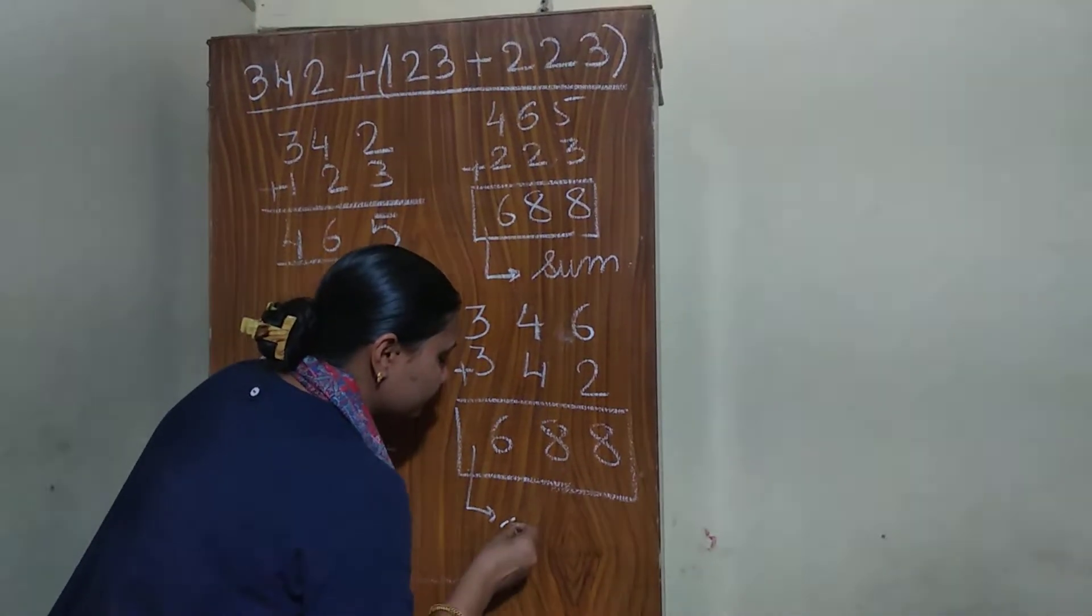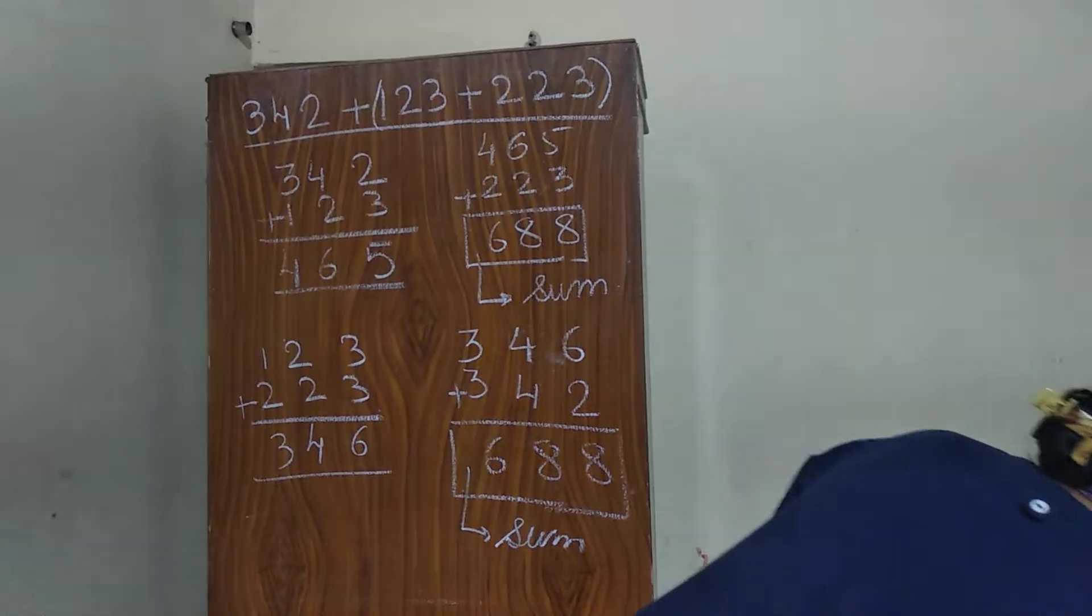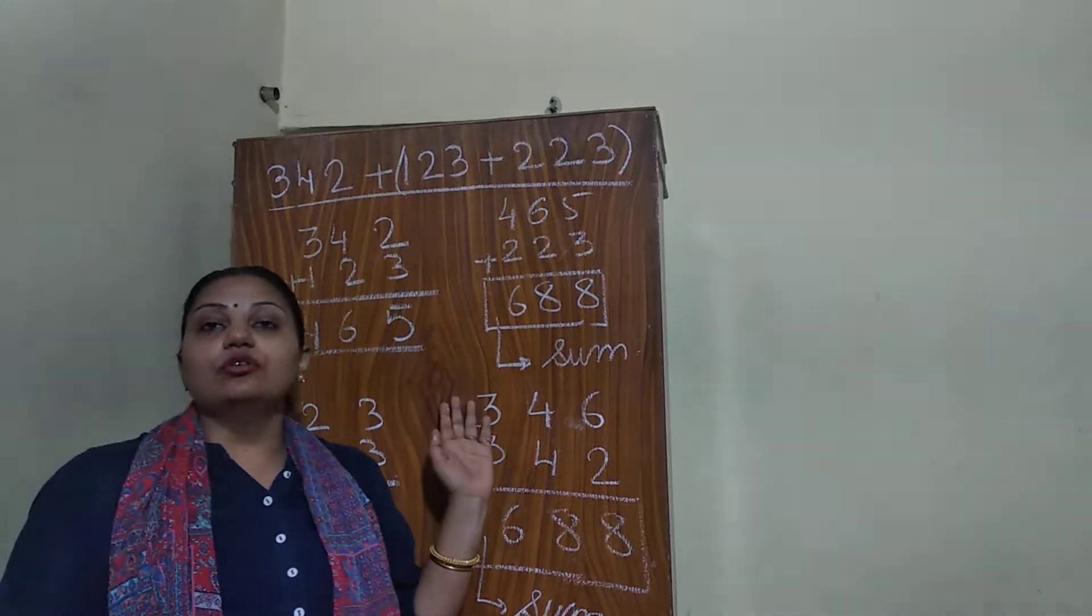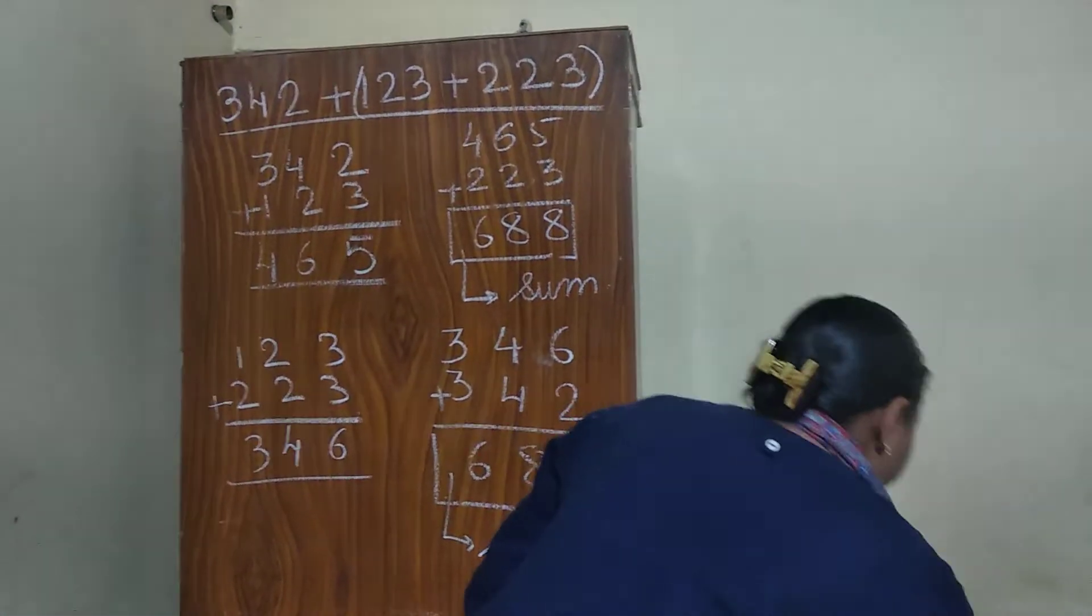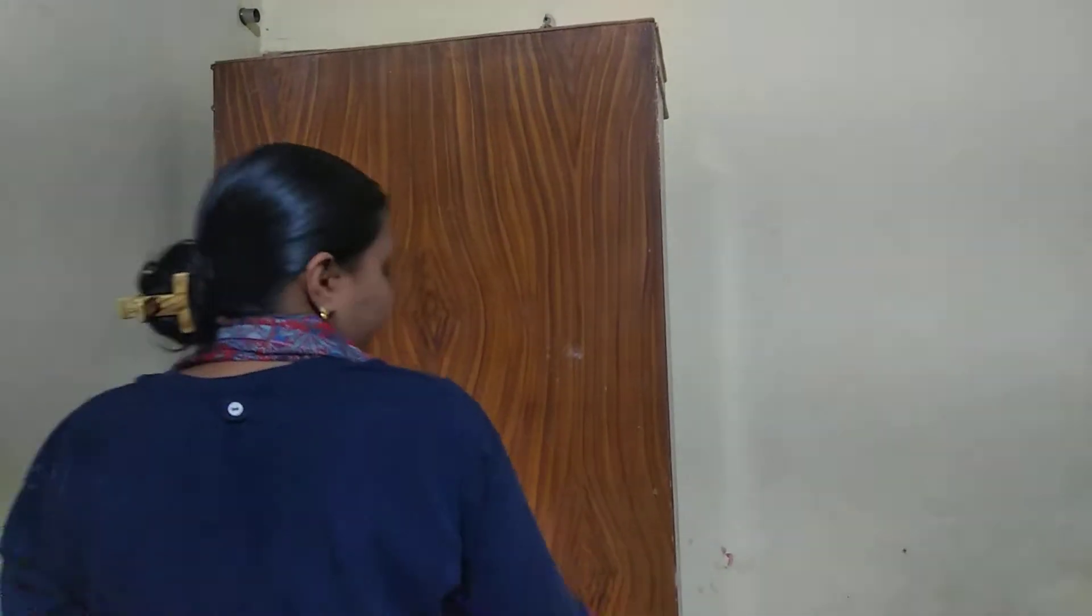it means that, if I will arrange the addends in any order, then also the sum is same. Now, what are the points we have learned here, that definition of addition, if we change the position of the addends, then also the sum is same, and we have to arrange it in column, then add. One more point is here, that when we are doing the addition process, we will start from 1's place, then 10's place, then 100, then 1000, and so on.